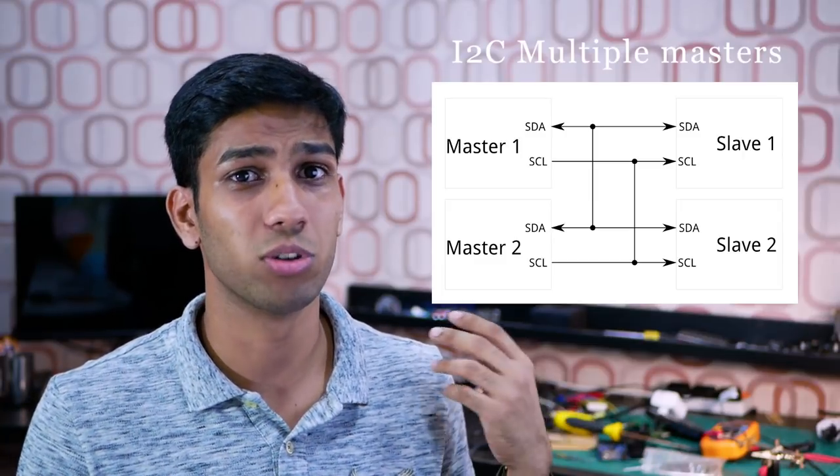Next, SPI only supports one master device, while I2C actually supports multiple master devices. Next, SPI doesn't have error correction like UART, or it doesn't have acknowledged bits like I2C.